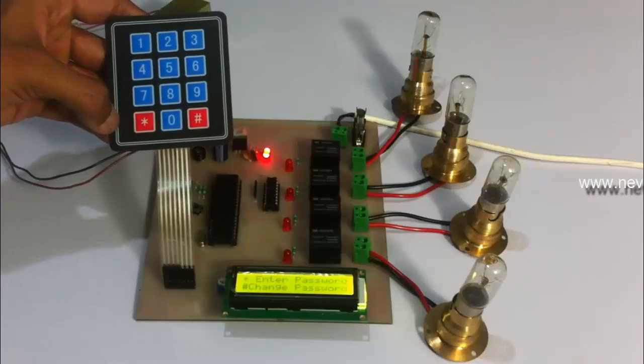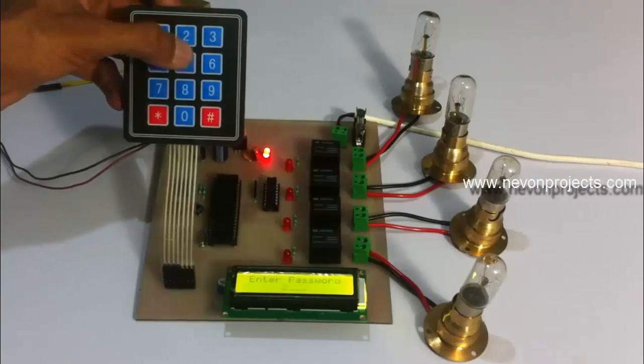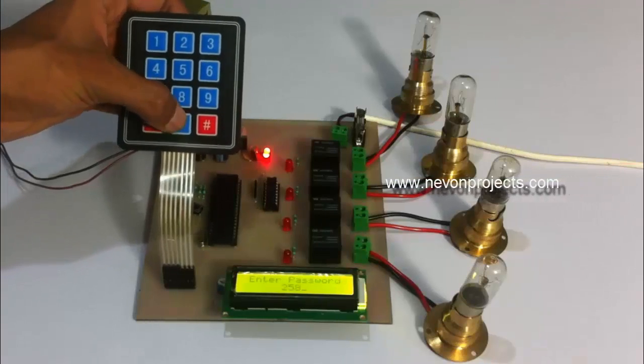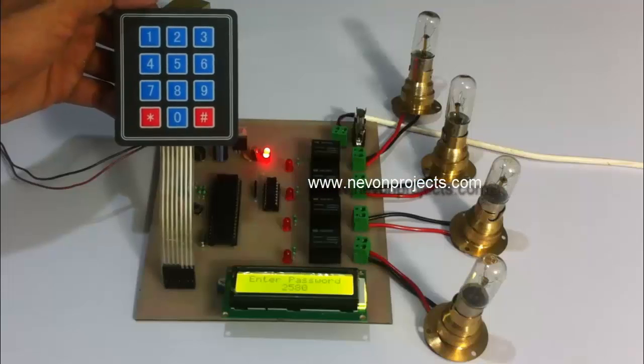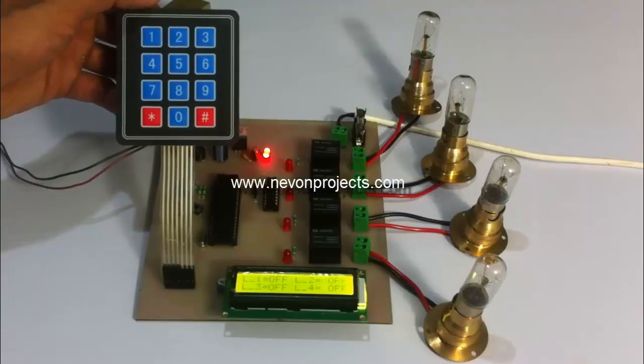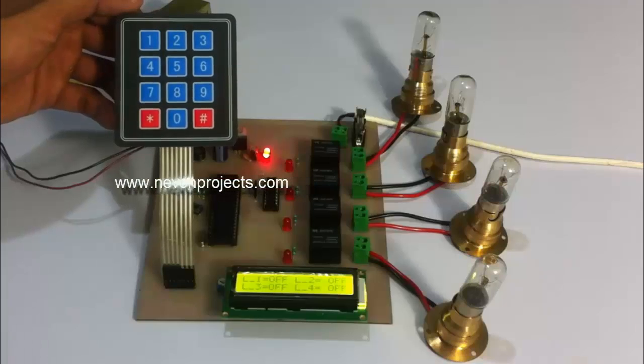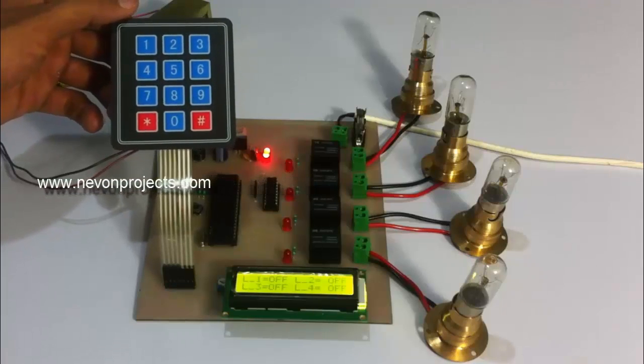Let's enter the right password now. This is the right password to 580. The password is accepted and it shows the status of various lines. Line 1 is off, line 2 is off, 3 and 4 all are off.